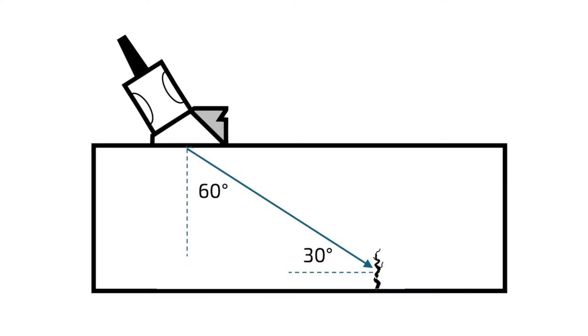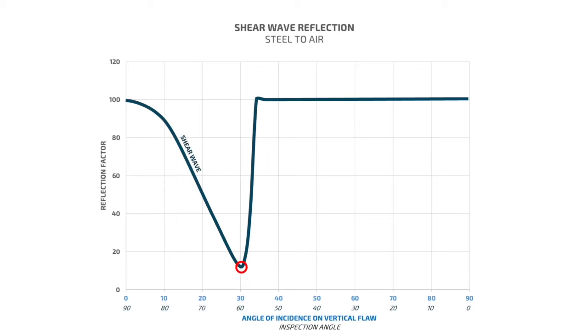I actually don't agree with this entirely. The problem is that you're making an assumption that everything you're trying to find at that root position is going to be straight up and down. And as we saw on the graph, just a slight five-degree tilt can make all the difference.